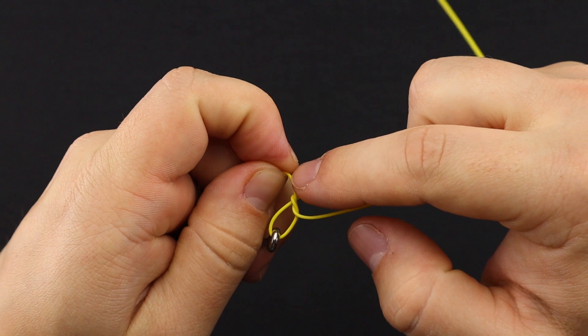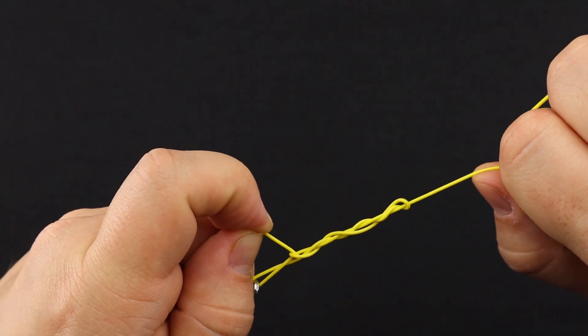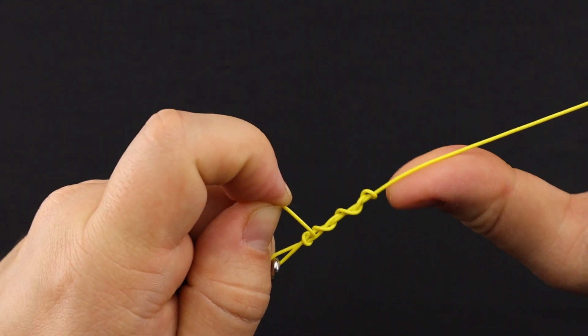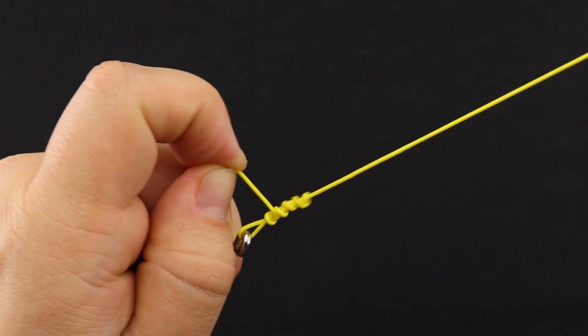On the right end of your main line, go and start pulling the knot snug. You'll want to lubricate the knot at this moment to prevent any line burn, and just keep tension on the tag and keep pulling on that main line and this knot will come right down to the hook.